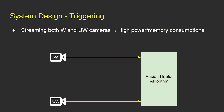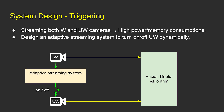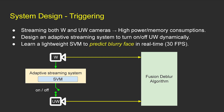Our fusion algorithm requires a mobile phone to stream both wide and ultra-wide cameras. However, this will consume high power and memory usage, and cause thermal risk. To save power, we design an adaptive streaming system to turn on the ultra-wide camera dynamically. Specifically, we learn a lightweight SVM model to predict if the current frame needs motion de-blur based on metadata available in the camera driver layer, such as exposure time, digital gain, face motion vectors, and sharpness. By this design, we turn on ultra-wide camera streaming only when the capturing environment may potentially produce motion blur on faces.